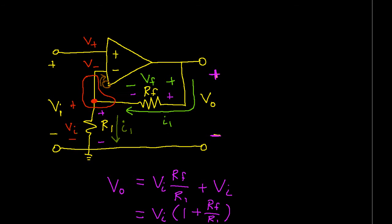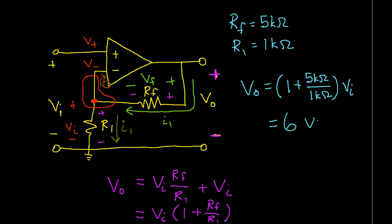For example, suppose that RF is 5k ohms and R1 is 1k ohm. Then, we plug the values for RF and R1 into our formula for the gain, and we get that Vout is 1 plus 5k ohms over 1k ohm. That's 5,000 divided by 1,000, which is 5. So the gain of the op-amp circuit is going to be 1 plus 5, which is 6.